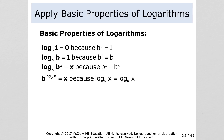Log base b of b is 1. So if the base and what you're taking the log of are the same, then it's 1 — because b to the 1 is equal to b. Log base b of b to the x is x. That makes sense: if log base b of b is 1, then log base b of b to the x is 1 times x, which is x. And then b to the log base b of x is also x — that's just going backwards. This log base b of b essentially cancels, leaving x.